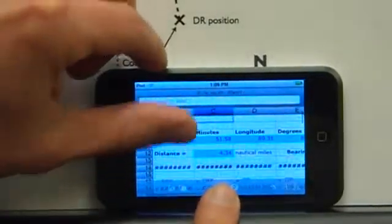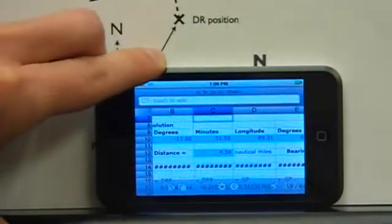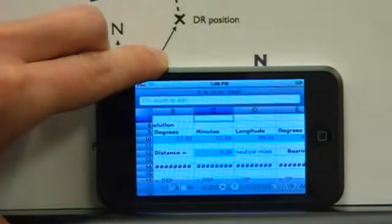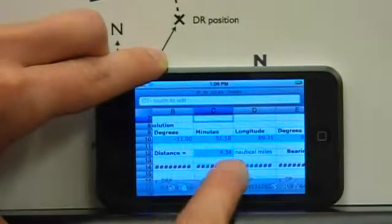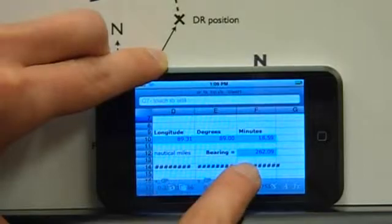The distance from the dead reckoning position to the estimated position is 4.3 nautical miles with bearing 262.